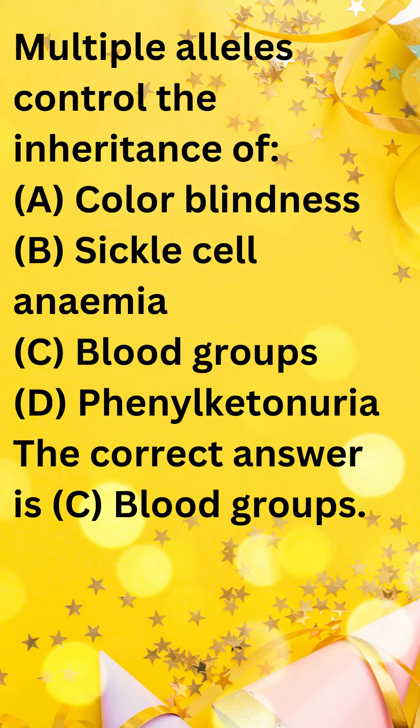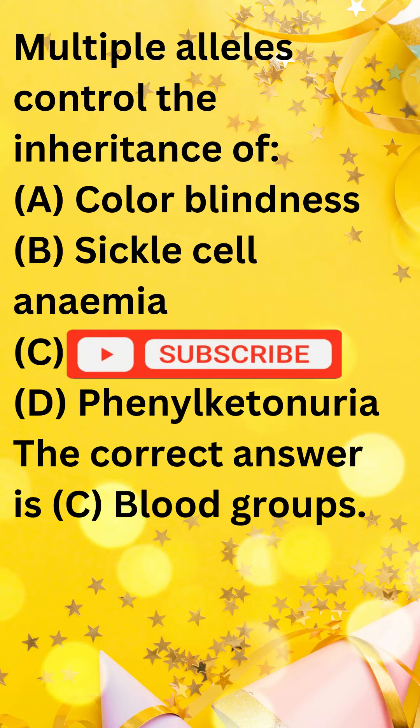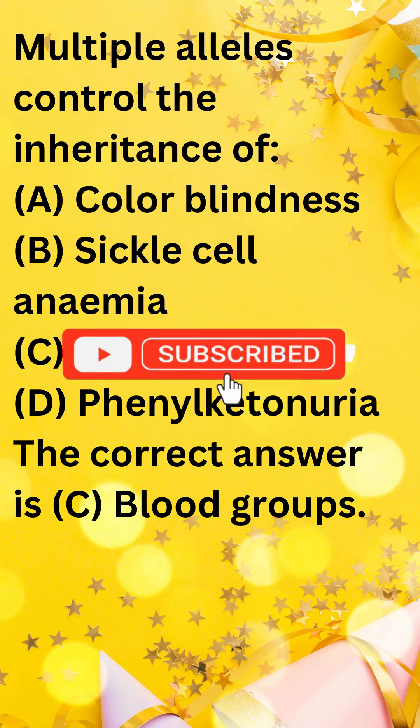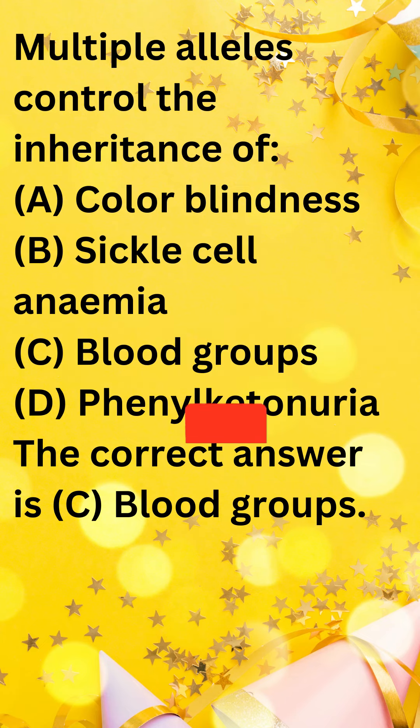Blood groups are an example of multiple alleles, where the ABO blood group is determined by three alleles — A, B, and O — on a single gene.